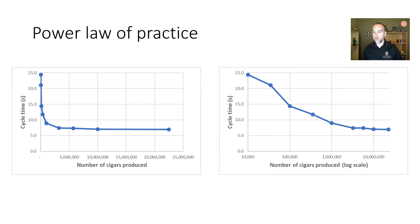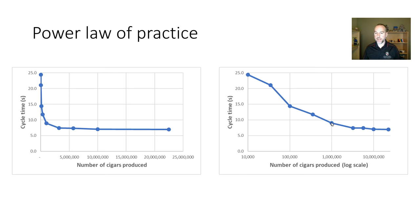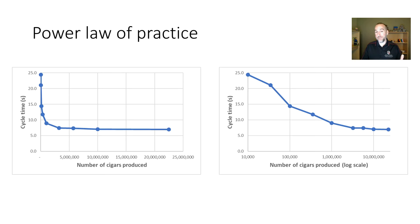If we put this data on a logarithmic scale, we can see the time changes more clearly. When a cigar roller has produced 10,000 cigars, it takes about 25 seconds. After a million total trials, it takes about nine seconds. From one million to ten million cigars — ten times the practice — there's only a very small improvement: from nine seconds to maybe seven and a half. That improvement gets smaller and smaller as we invest more time. In some ways there's not much left to learn; in another way, there are capacity limits on human performance — we can't get the time down to zero.